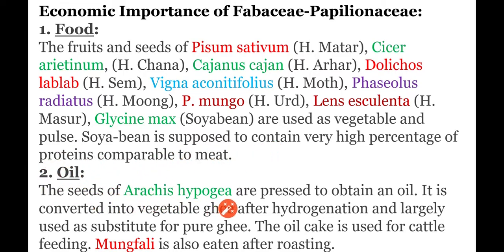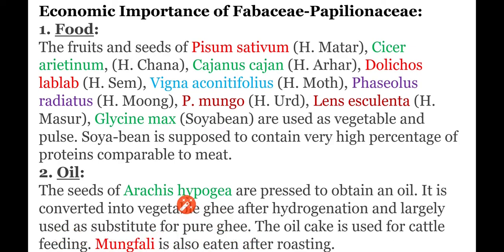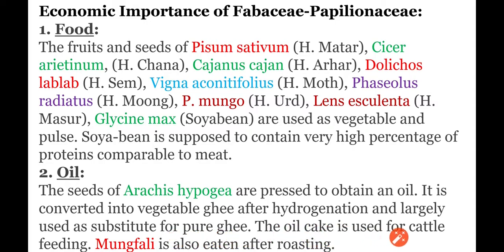The next field is oil. The seeds of Arachis hypogaea are pressed to obtain oil. It is converted into vegetable ghee after hydrogenation and is largely used as a substitute for pure ghee.